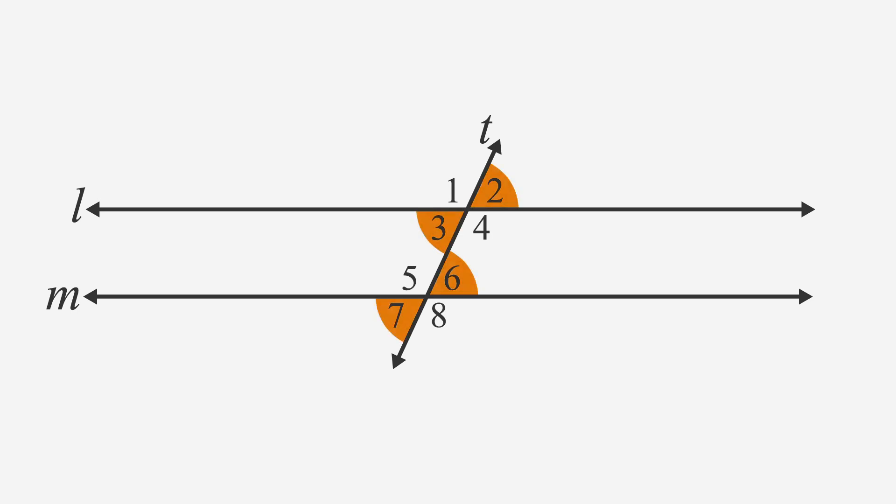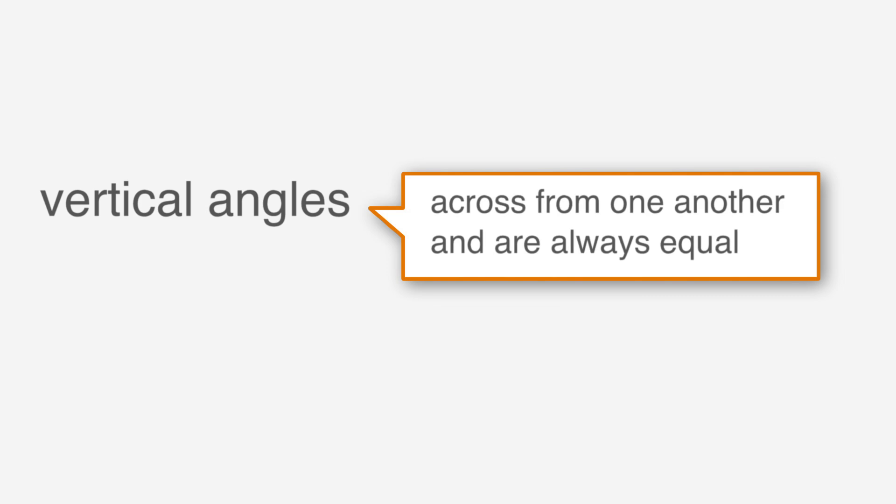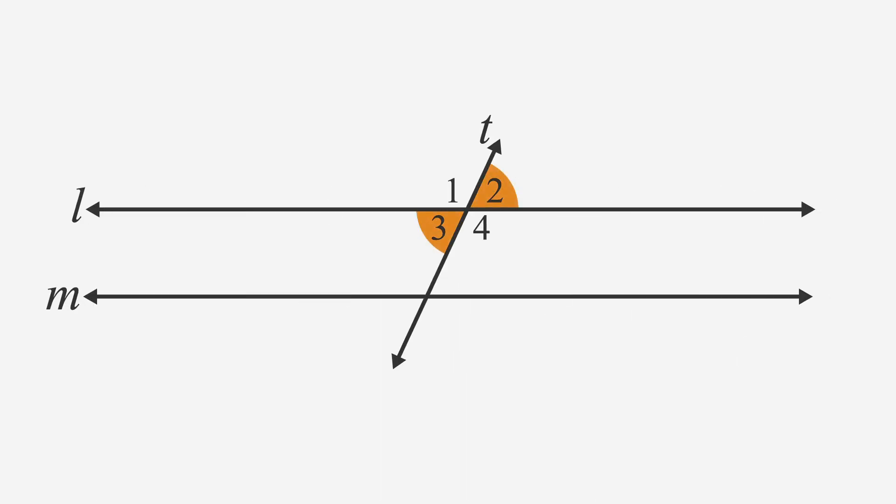These angles are vertical and corresponding angles. Vertical angles are across from one another and always equal. Angles 2 and 3 in our figure are vertical angles. So, if angle 2 has a measure of 50 degrees, so does angle 3.